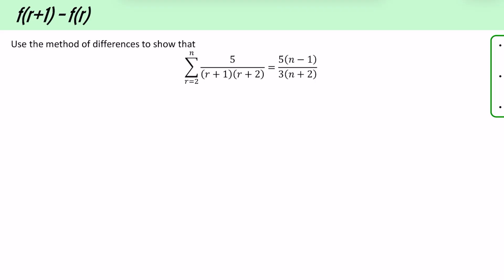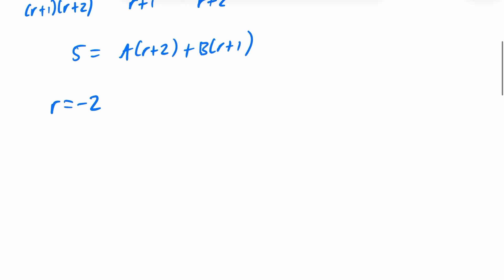So to get this in a form where we can apply the method of differences, I'm going to need to do partial fractions on this 5 over (r+1)(r+2) that we've got here. And we know that standard form would be A over r+1 and B over r+2, which means that we have the A with the r+2 and the B with the r+1. This is a further maths video, so I'm just going to go pretty quick for this. So if r is -2, we get that 5 equals -B, meaning that B equals -5. And if r equals -1, we get that 5 equals 1A, so A equals 5.